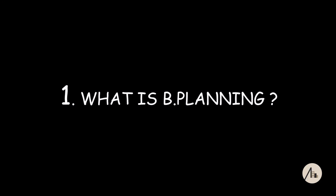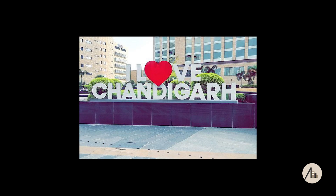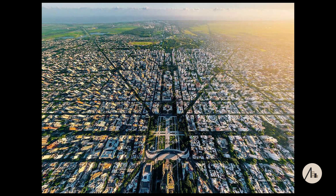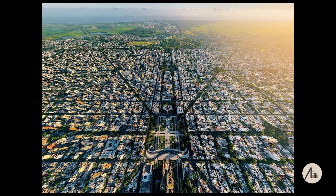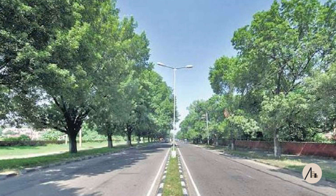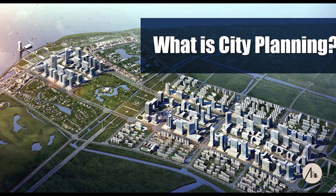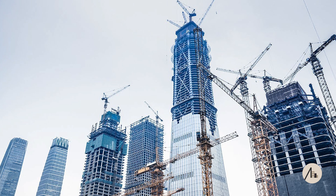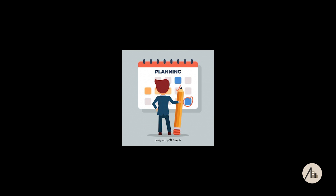The first question I will be answering is: what is B Planning? B Planning is a relatively newer field with great scope and huge demand these days. Planning deals with urban planning techniques. To give an example, Chandigarh city is a well-planned city. Its functionality is very different from other cities — it was designed and planned before being constructed. That is the work of a planner.